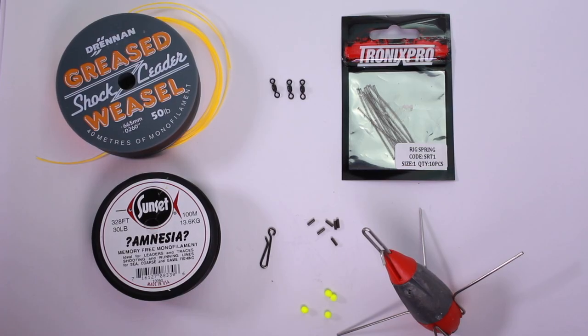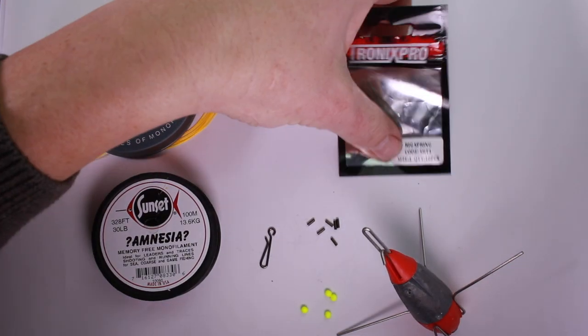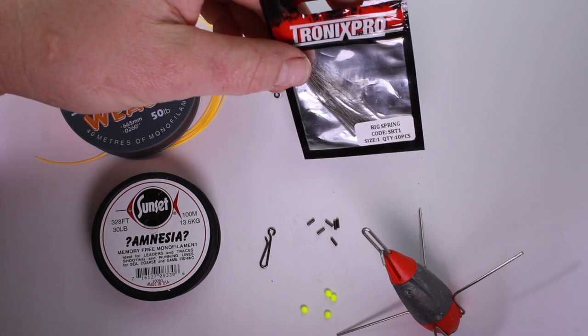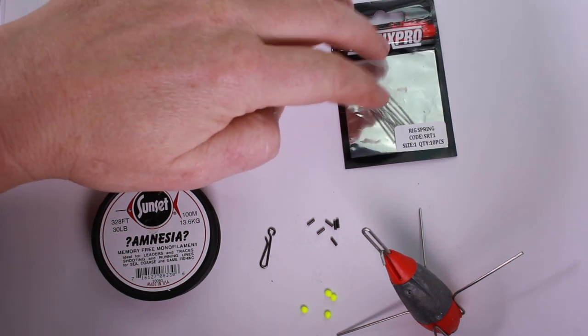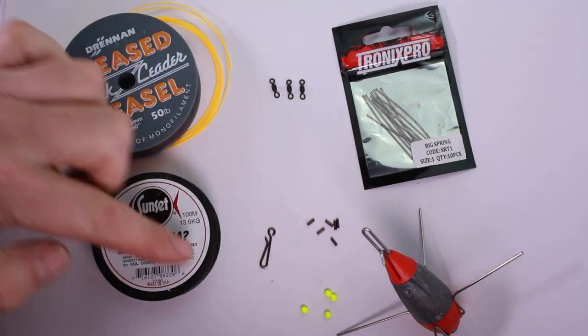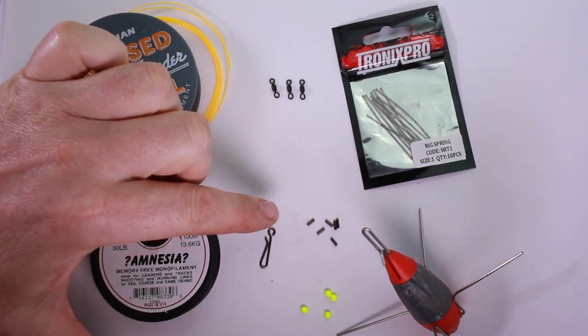So ideal for your winter cod and whiting. This rig utilizes these rig springs - I use the Tronix Pro ones. That's the only real particular bit of tackle you need for this. Everything else is your normal stuff.